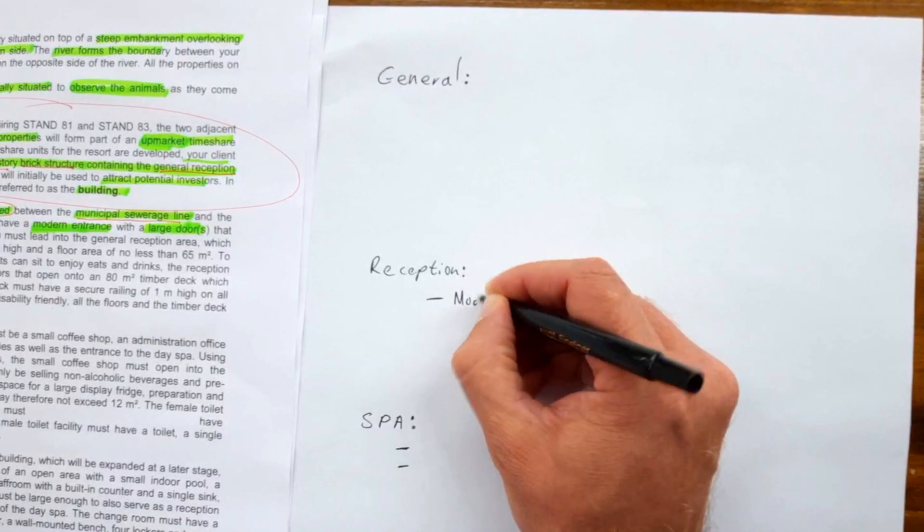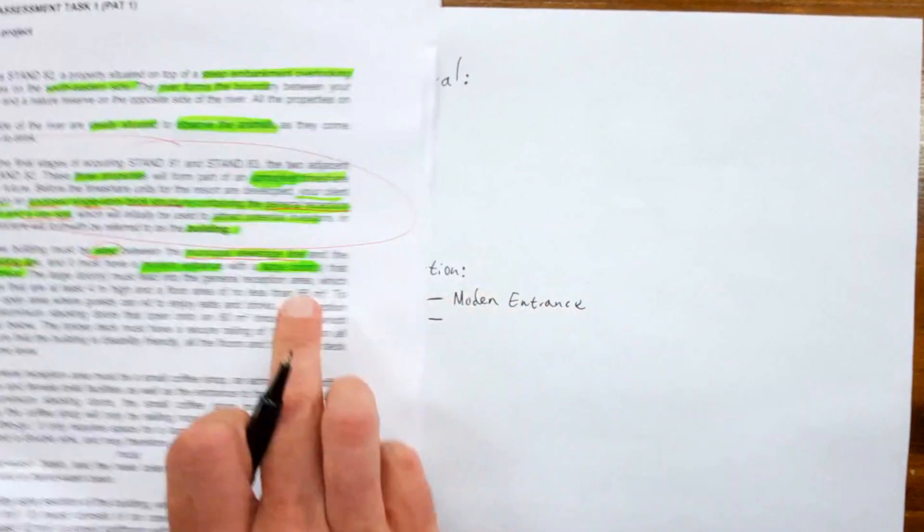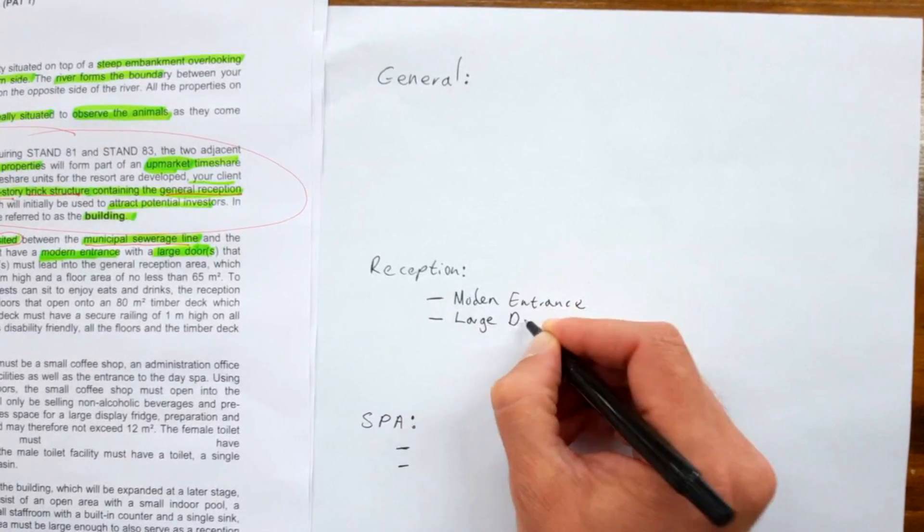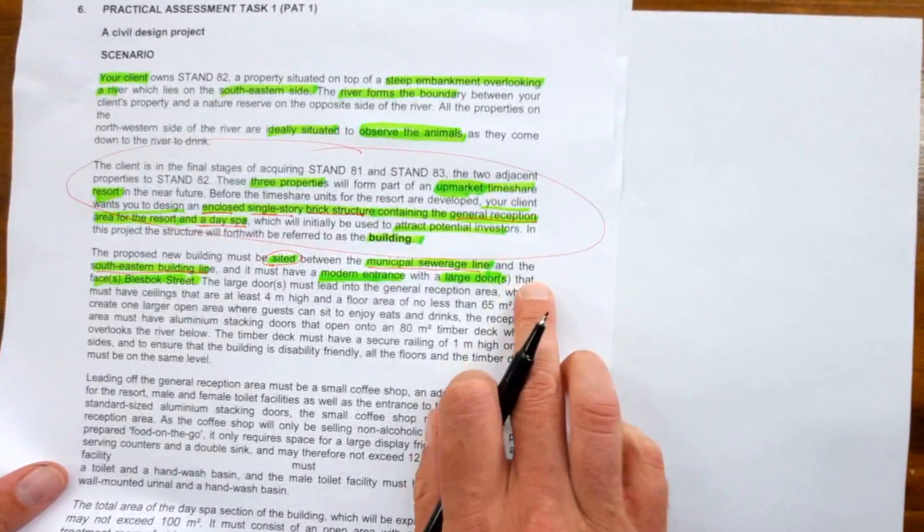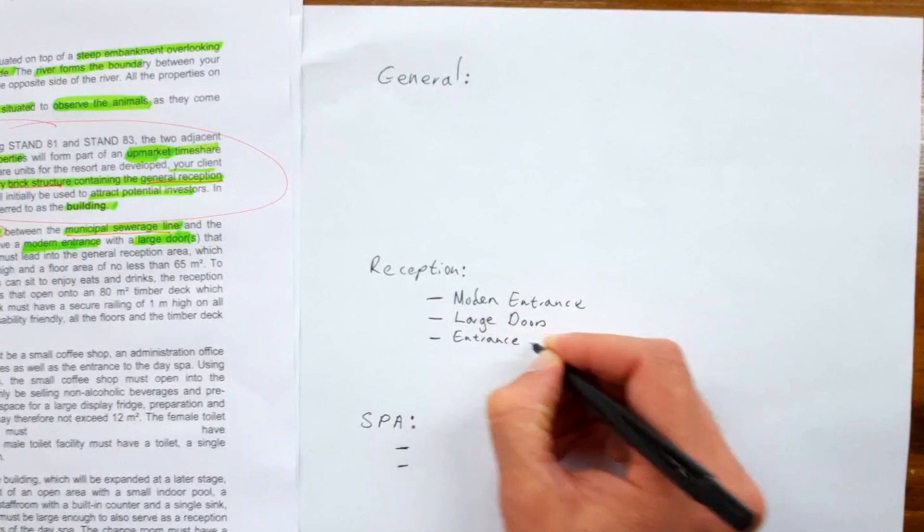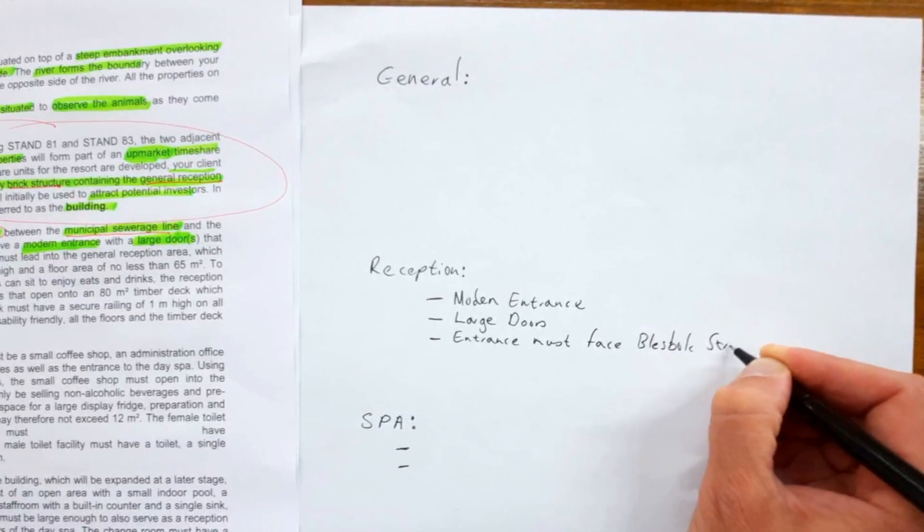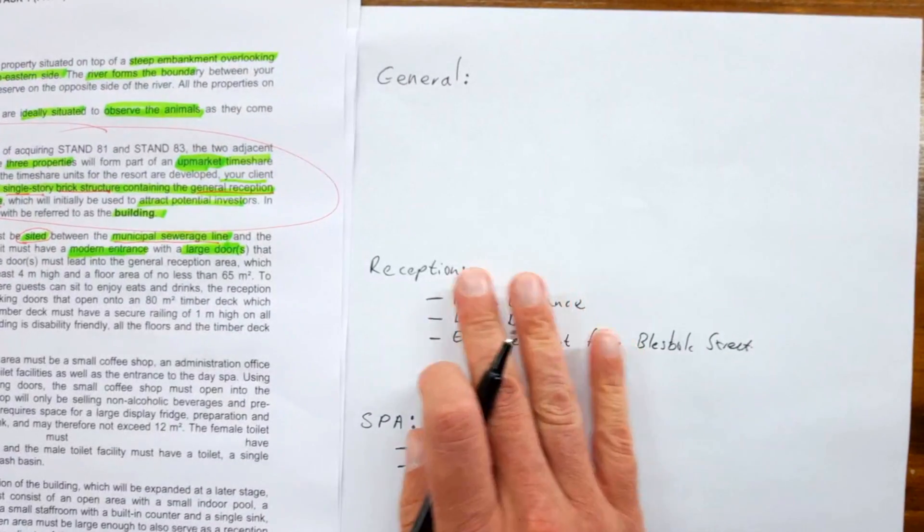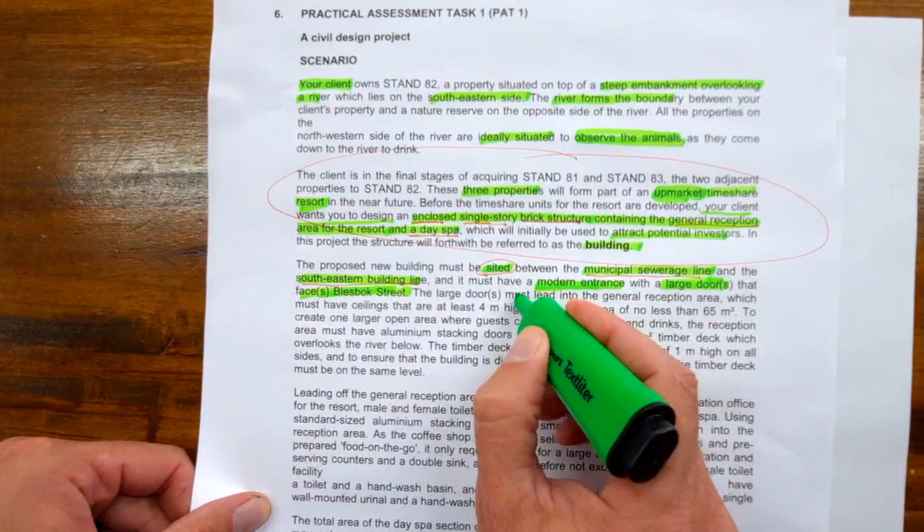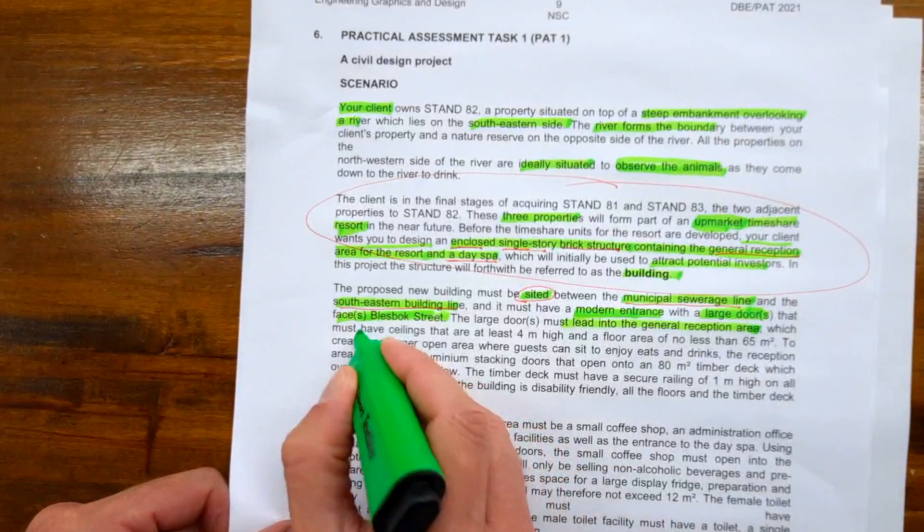The entrance must have a modern entrance—that's under reception. So you can write that down. Second, must have large doors. Third specification: the doors must face Blaze Block Street. You can say entrance must face Blaze Block Street. You'll go through this document doing a rough draft of your different component specifications.